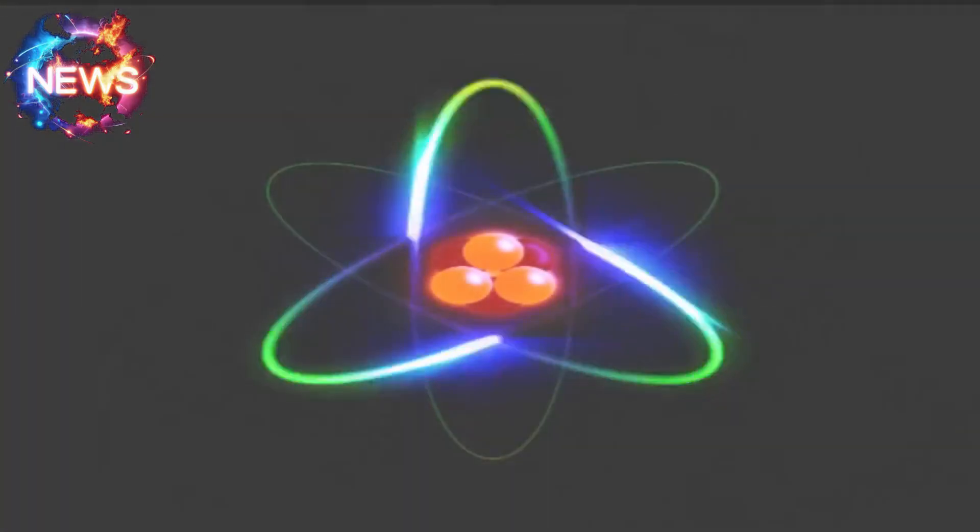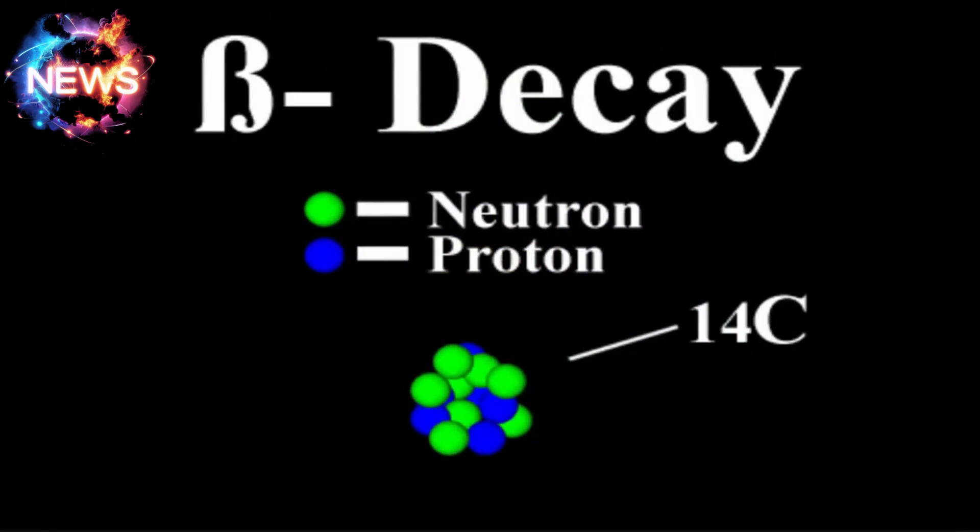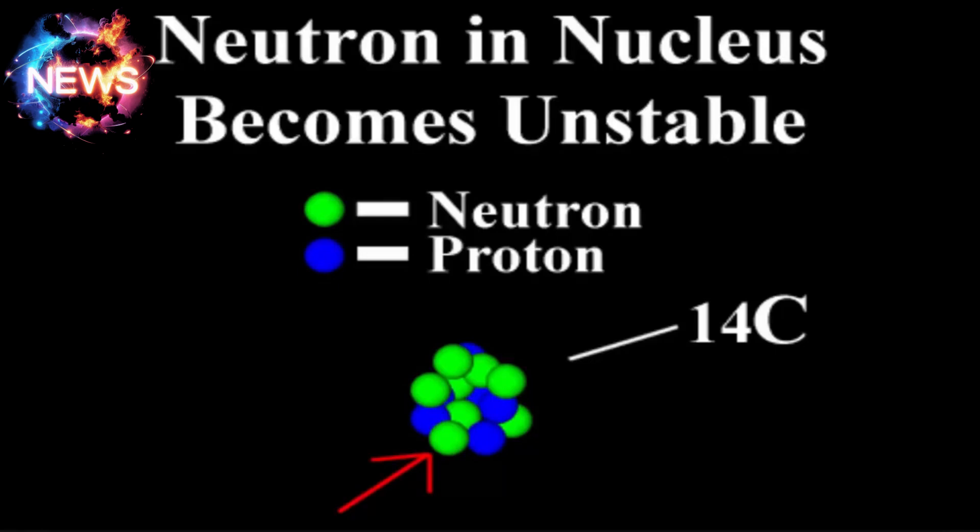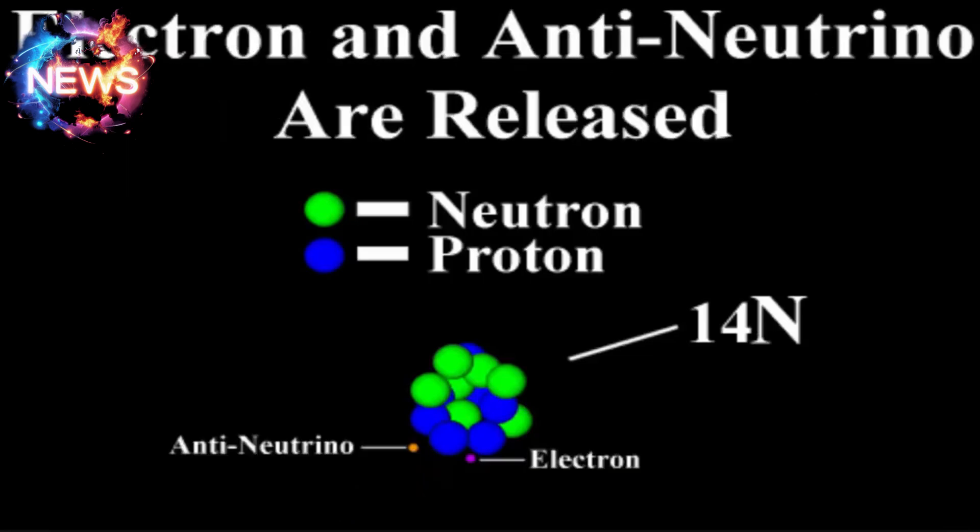The Standard Model of Particles: In the Standard Model of particle physics, which describes the fundamental forces and elementary particles, the neutrino plays a crucial role. It is one of the elementary particles, having no electric charge and a very small mass.